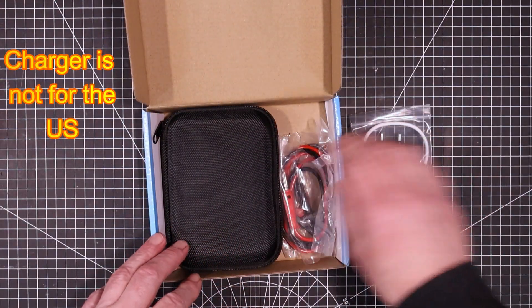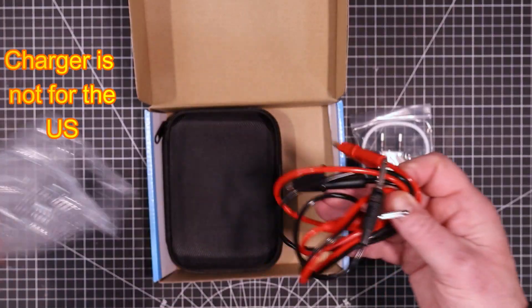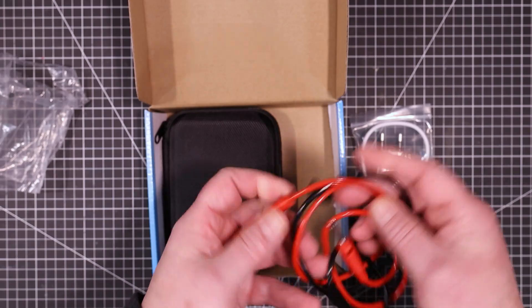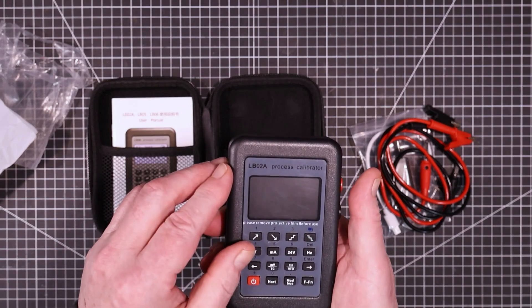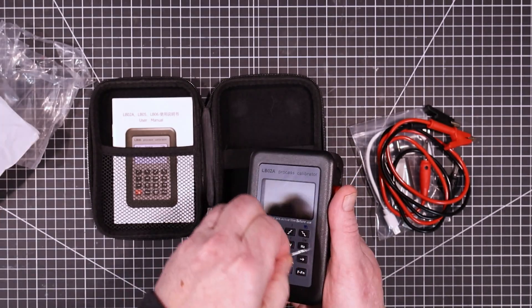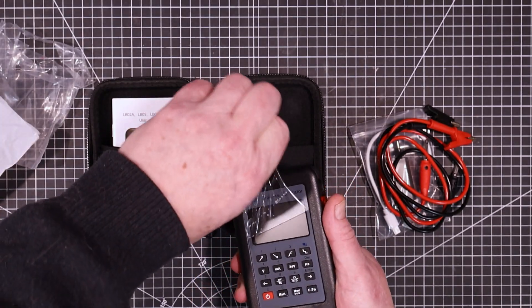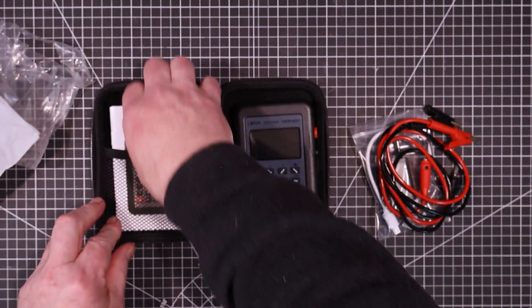It comes with a charger and this set of cables which are actually pretty nice cables. And there it is in all its glory. Does it have a peel off here? Peel that off. And it comes with a manual.